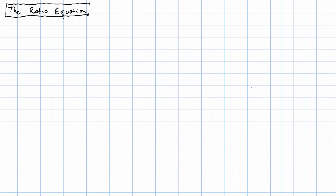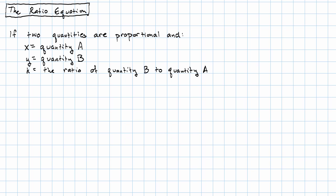Specifically, we can say that if X represents the amount of quantity A, Y represents the amount of quantity B, and K is the ratio of the two quantities, then Y is equal to the ratio times X.